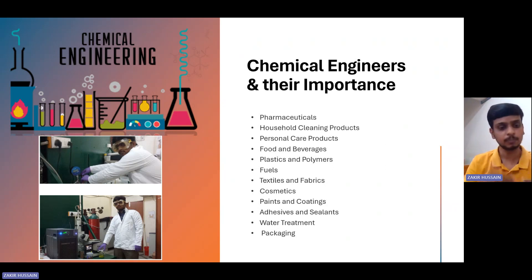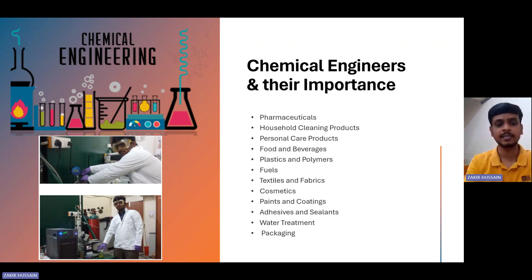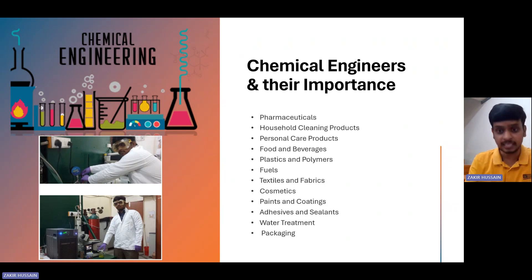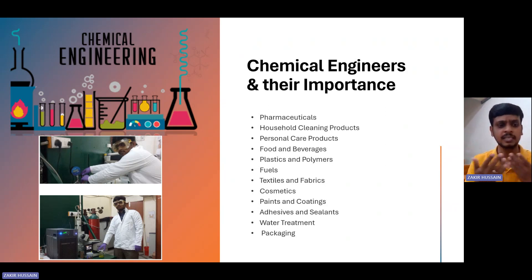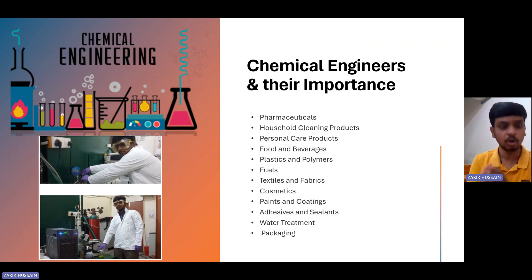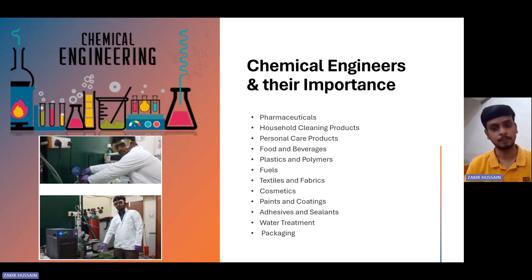Chemical engineers have thorough knowledge of processing techniques — deciding which type of product is desired from the crude oil. They design and operate refineries where crude oil is processed into gasoline, kerosene, or any type of fuel. Large companies like ExxonMobil, Shell, HPCL, BPCL, IOCL, and Reliance employ chemical engineers to optimize their processes, improve yield, and reduce environmental impact.